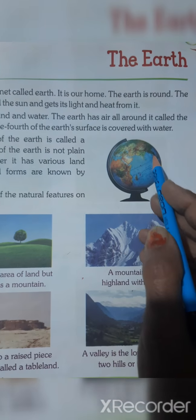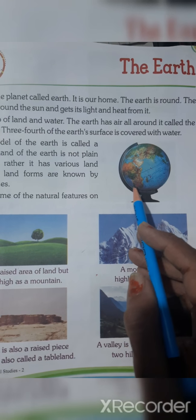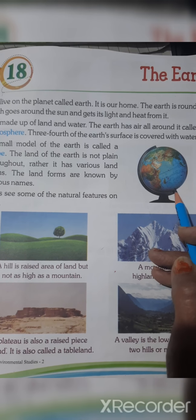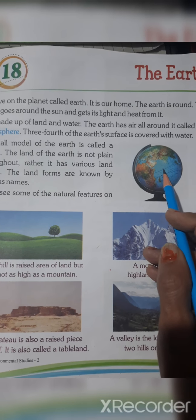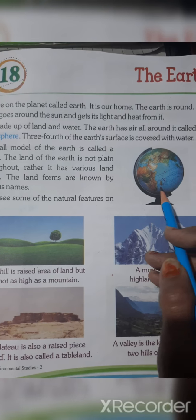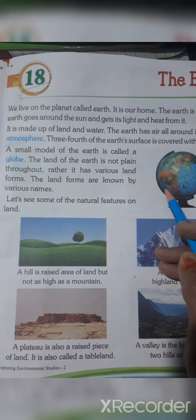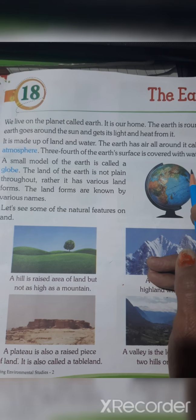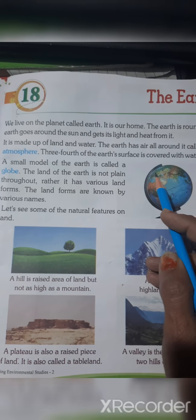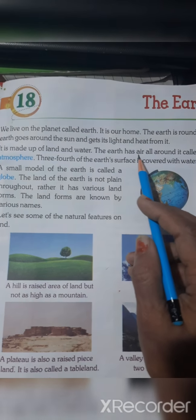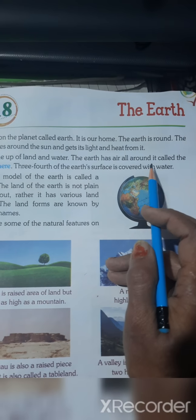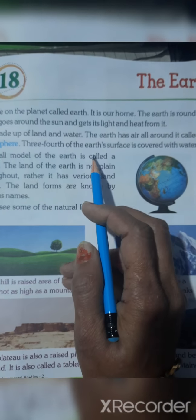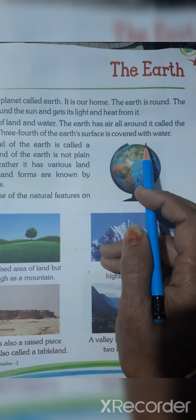Children, when you see this kind of globe, you can see the blue part shown here — it is water, it represents the water part. And the rest of the part in green colour represents the landed part. The earth has air all around it called the atmosphere. Three-fourths of earth's surface is covered with water.